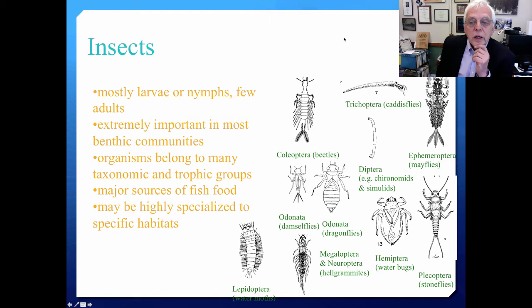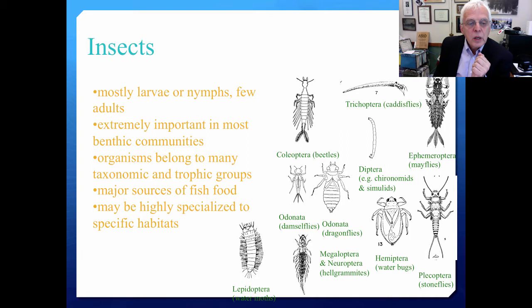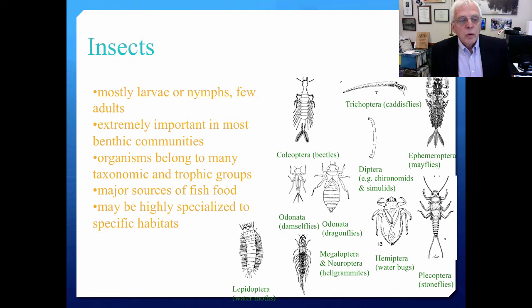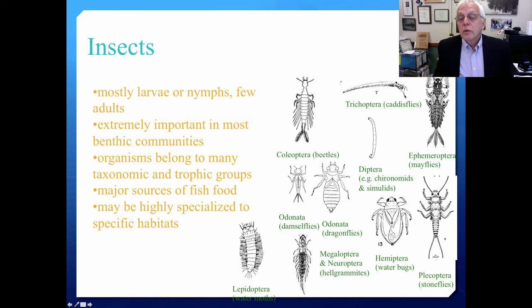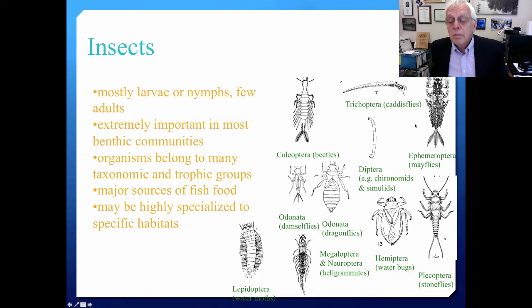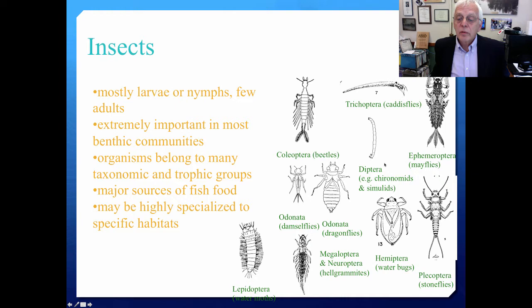The next group are the aquatic insects. You don't see very many that exist as adults in aquatic ecosystems — with a few exceptions like the hemiptera or water bugs — they're mostly larvae or nymphs. These are extremely important in most benthic communities and may make up the greatest part of biomass in many aquatic ecosystems. They belong to many different taxonomic and trophic groups, including the coleoptera (beetle larvae), trichoptera (caddisfly larvae with their cases), ephemeroptera (mayflies, which often emerge in profusion), and many dipterans including mosquitoes, chironomids, simulids, and black flies.